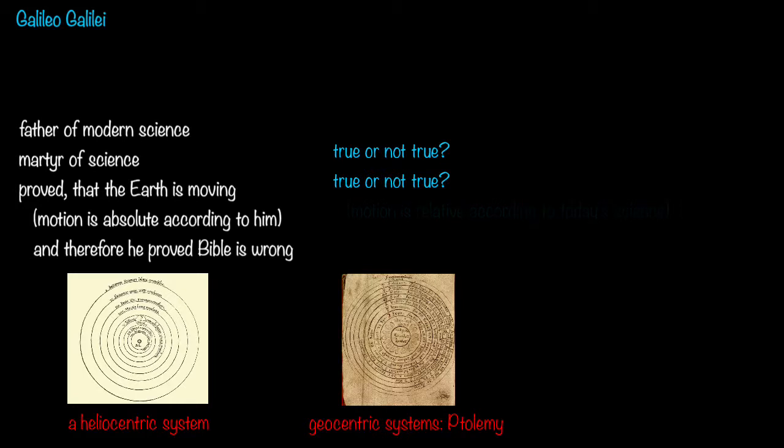The question is if a particular geocentric or a particular heliocentric system is right or not. One can make even heliocentric system wrong. If one makes up a system where the location of Mars and Venus are swapped, that system will not fit the reality. It will be false and it doesn't matter if it is heliocentric or geocentric.